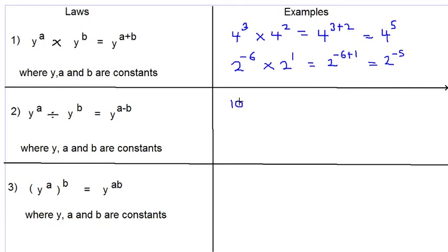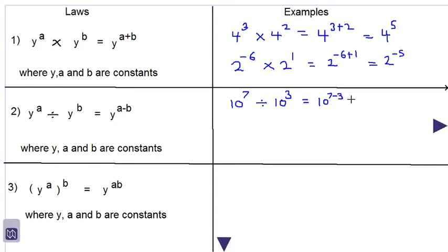10 to the power 7 divided by 10 to the power 3 would be equal to 10 to the power 7 subtract 3. 7 subtract 3 is equal to 4, so the answer would be 10 to the power 4 in index form.